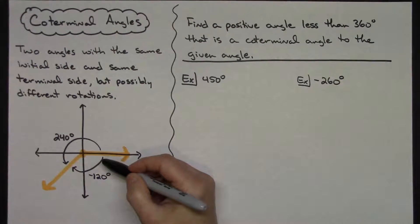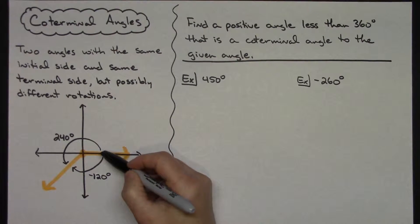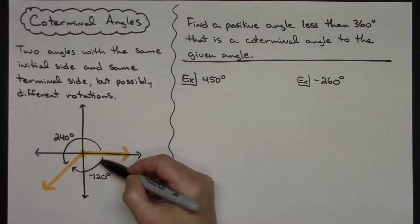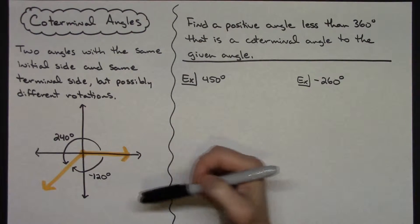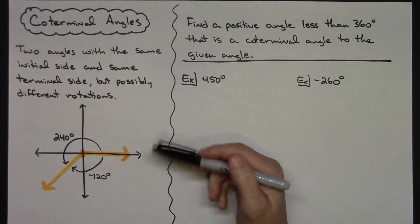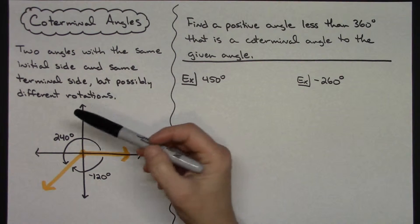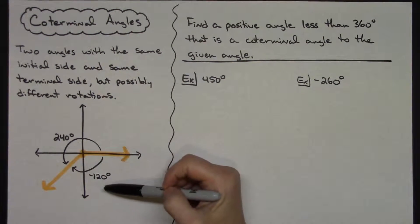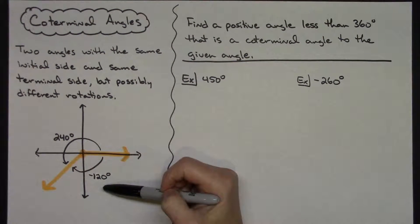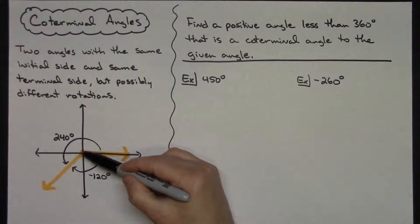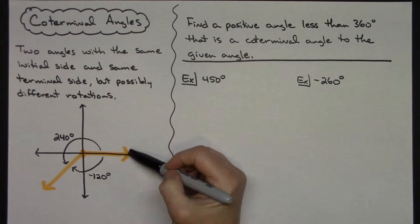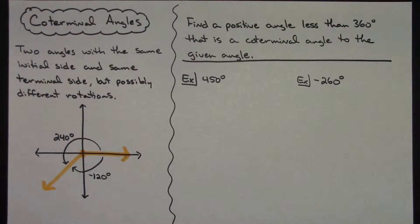A co-terminal angle could then have the same initial side and same terminal side, but if I chose a different rotation going the other way, that would be negative 120 degrees. So these two angles are an example of co-terminal angles. They don't have to be one positive and one negative — the main thing is they have the same initial side and the same terminal side.